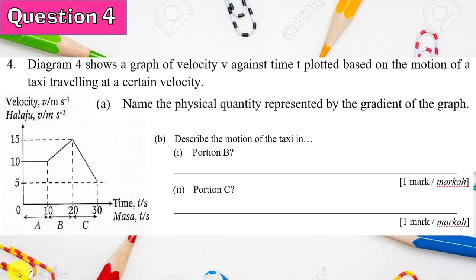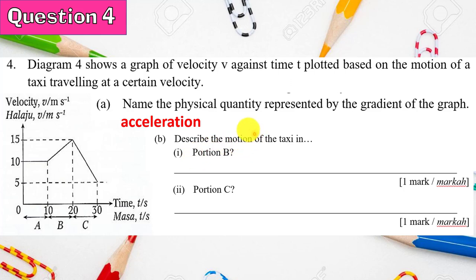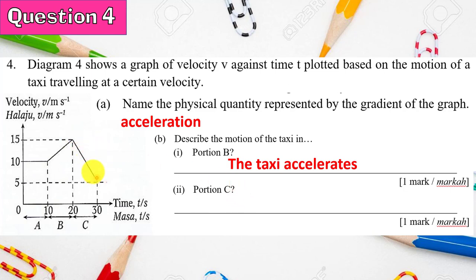Question 4: they show a V-T graph of a taxi traveling at certain velocities. There are three portions A, B, C. In portion A the taxi has constant velocity; in B it accelerates; in C it decelerates. The gradient of a V-T graph represents acceleration. For portion B, velocity increases — you can say it accelerates. For portion C, the gradient drops — velocity decreases — you can say there is deceleration.